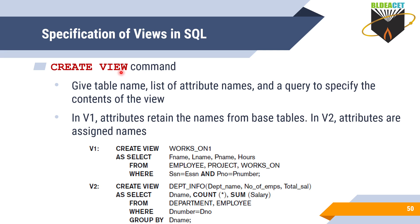For that purpose you use the CREATE VIEW command. Here is one more example: CREATE VIEW DEPARTMENT_INFO, which is the new virtual table, with attribute names renamed as DPT_NAME, NUMBER_OF_EMPLOYEES, and TOTAL_SALARY. The query is: SELECT DNAME, COUNT(*), SUM(SALARY) FROM DEPARTMENT, EMPLOYEE WHERE DNUMBER = DNO GROUP BY DNAME. So you group by department name to get how many employees and what the total salary is in each department.